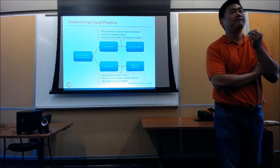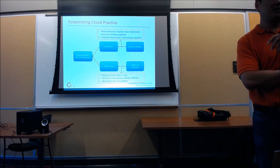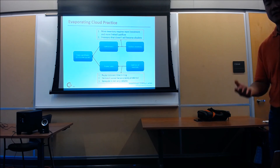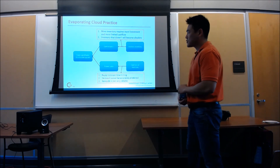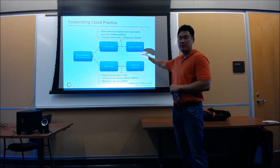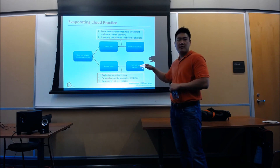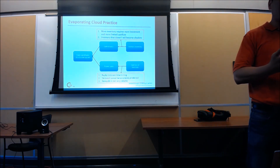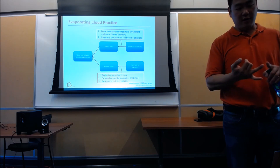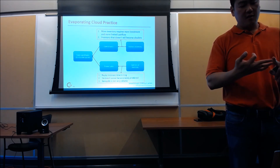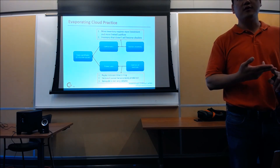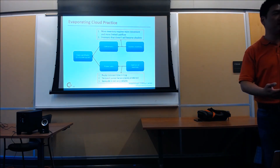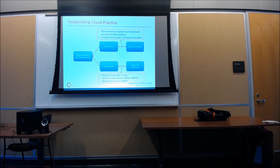In a lot of situations, if you're talking about implementing a TOC solution, you'll see it ends up being a conflict between cost and throughput. That seems to be a fairly consistent theme — people wanting to save money for their organization versus generating more throughput. From Eli Goldratt's perspective, it's always better to sell more than to make your costs go down. That's how you get to the goal.